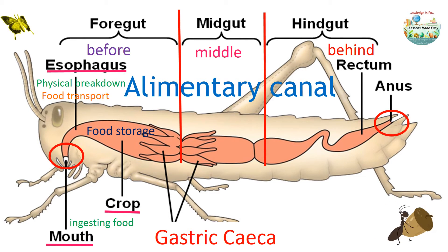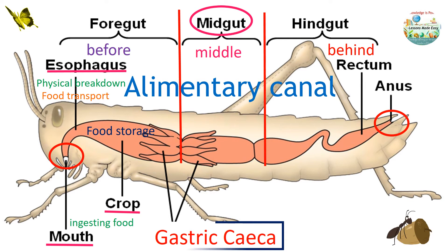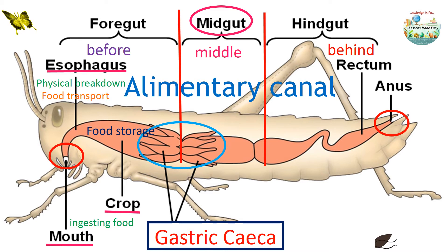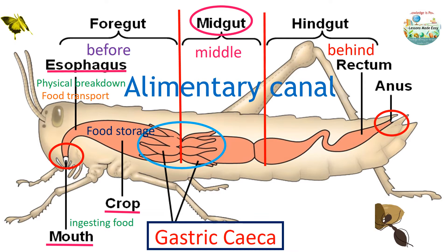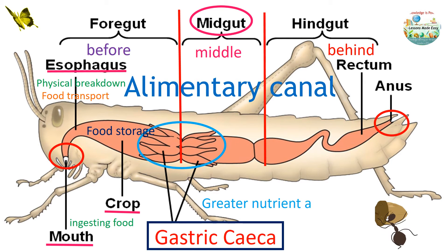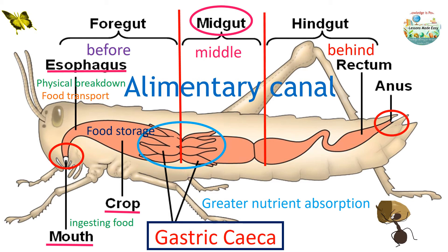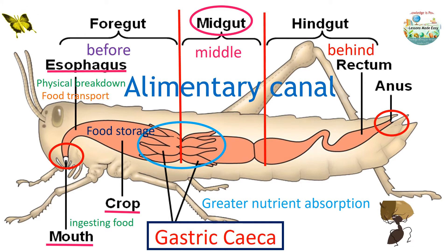The food is then moved to the next section called the midgut. The gastric caeca is a structure found between the foregut and the midgut — it marks the end of the foregut and the beginning of the midgut. It is believed that these structures increase surface area for greater nutrient absorption. Most digestion and absorption of nutrients occur in the midgut.